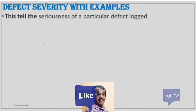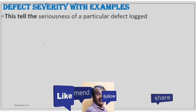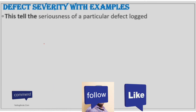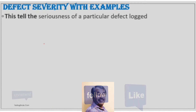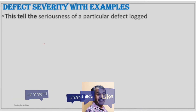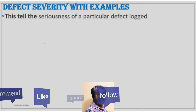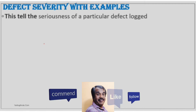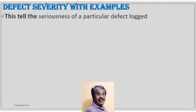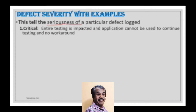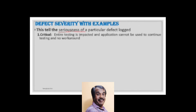Defect severity tells the seriousness of a particular defect that we log — that is very crucial. Based on the seriousness of a defect, we classify defect severity into four categories.